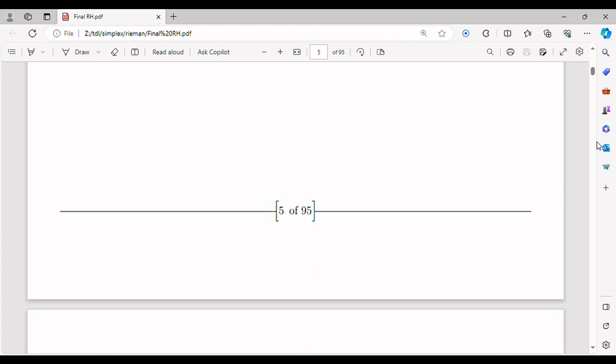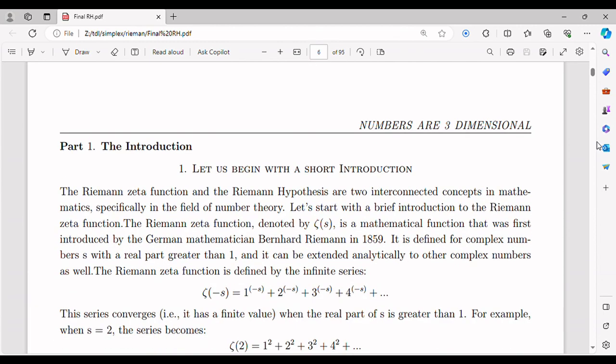The Riemann zeta function is a complex-valued function defined for complex numbers s with a real part greater than 1. It is defined as the sum of the reciprocals of the positive integers raised to the power of minus s. Mathematically, zeta of s can be expressed as 1 to the power minus s, plus 2 to the power minus s, plus 3 to the power minus s, and so on, up to infinity.